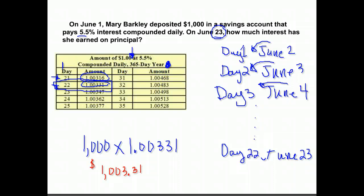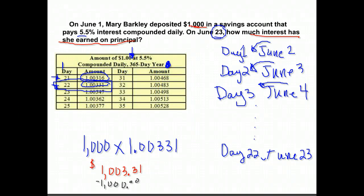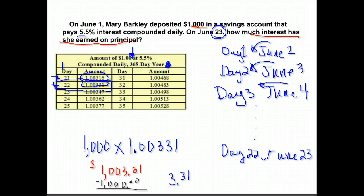That tells us on the 22nd day she'll have $1,003.31. The question wants to know how much interest has she earned. If she started with $1,000 and now she has $1,003.31, how much extra money does she have that she didn't have when she put it in? If we subtract the $1,000 she had originally, we find out how much money she has made in interest. The answer is $3.31.